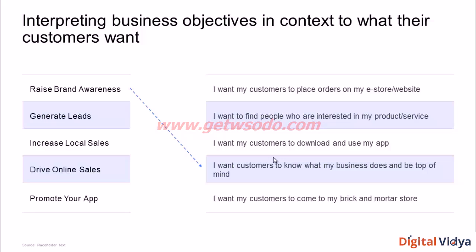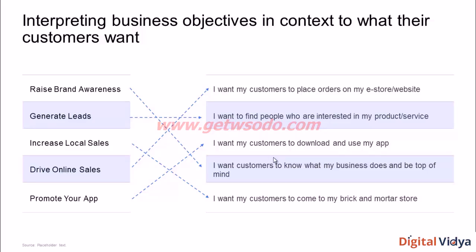Pause the video, do the other four matches, and then come back. Here are the answers: generating leads matches with wanting to find people who are interested in your product or service. Increasing local sales is wanting to get customers to walk into your brick-and-mortar store. Driving online sales is wanting your customers to come to your website and place orders. Promoting your app is wanting customers to download and use your app. Hope all of you got all of these right.